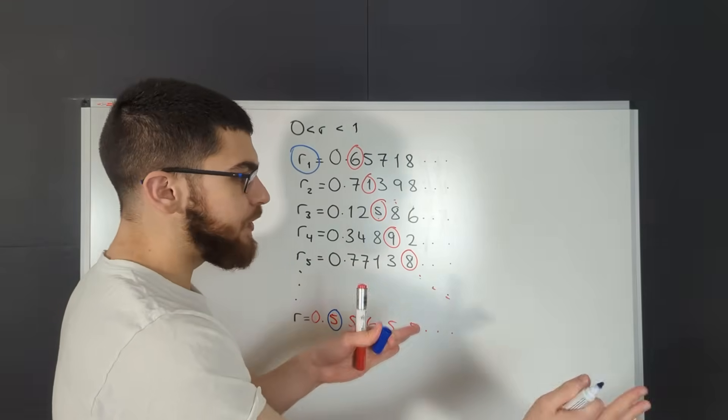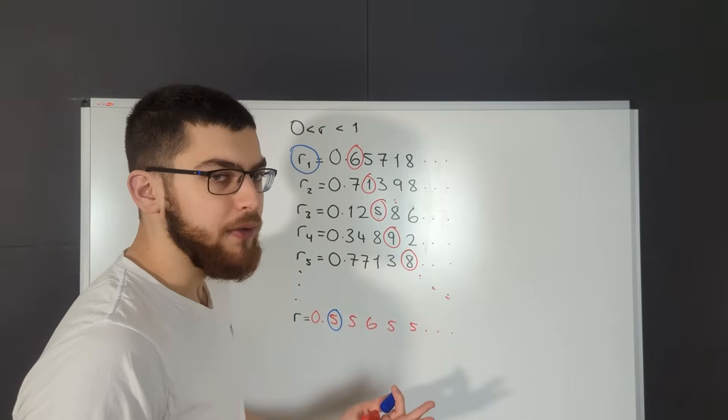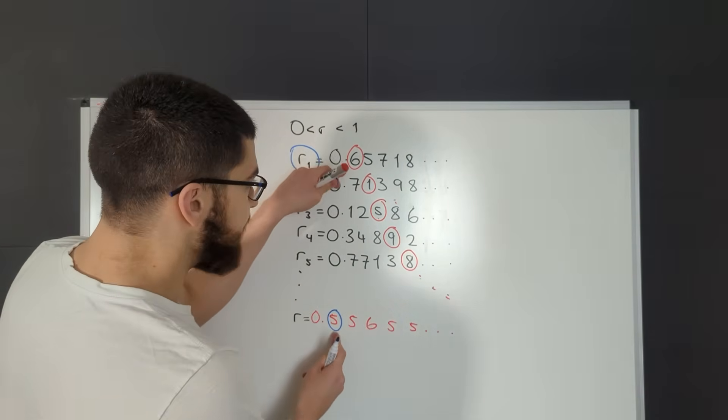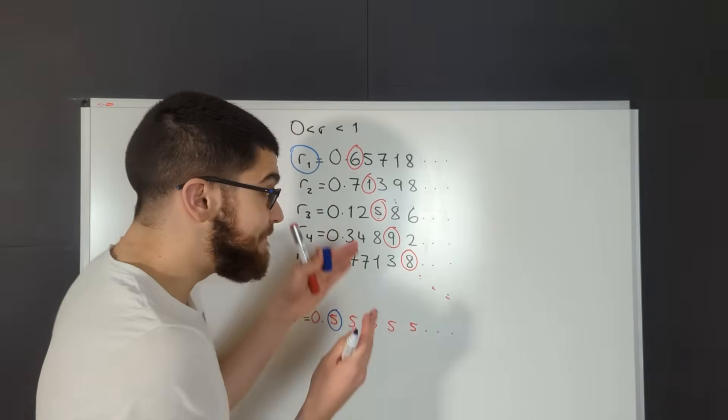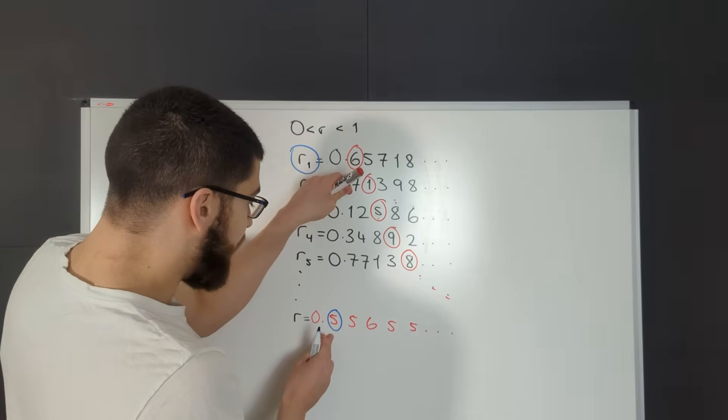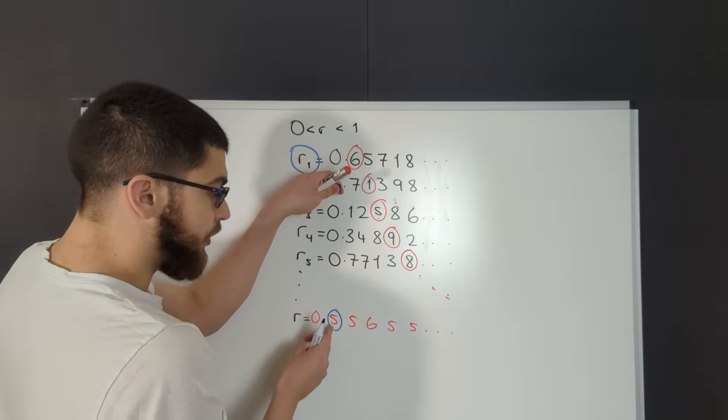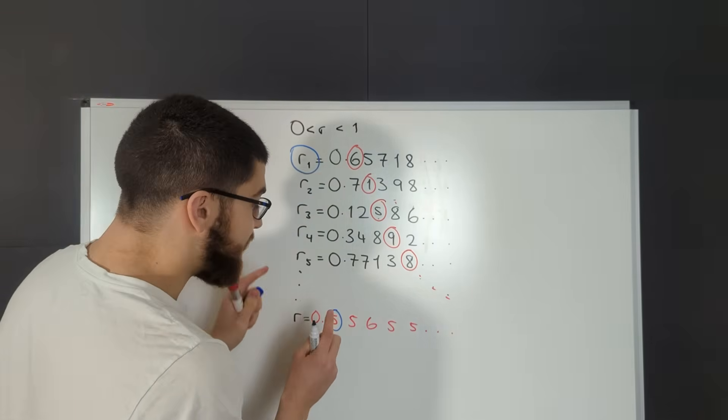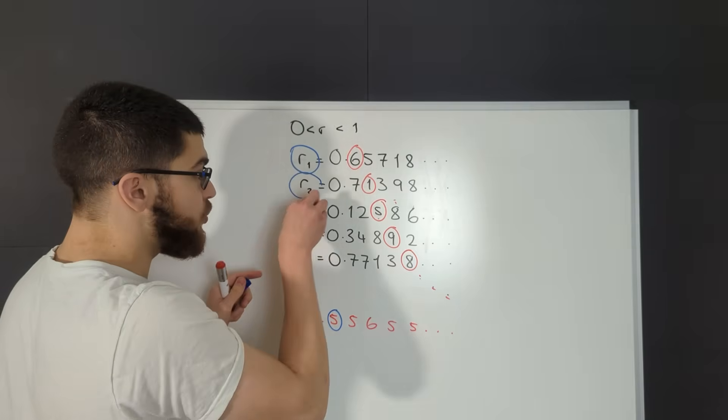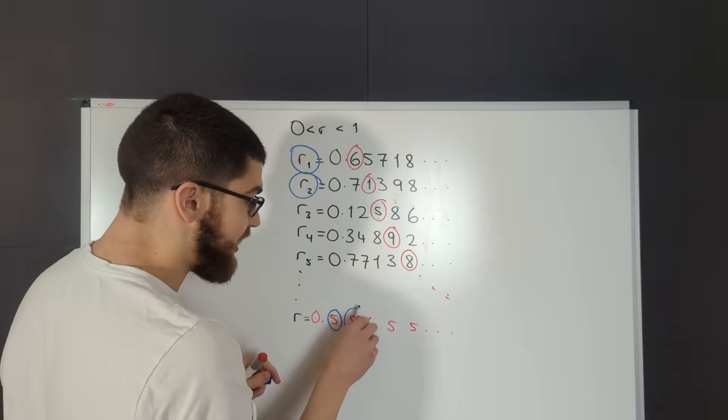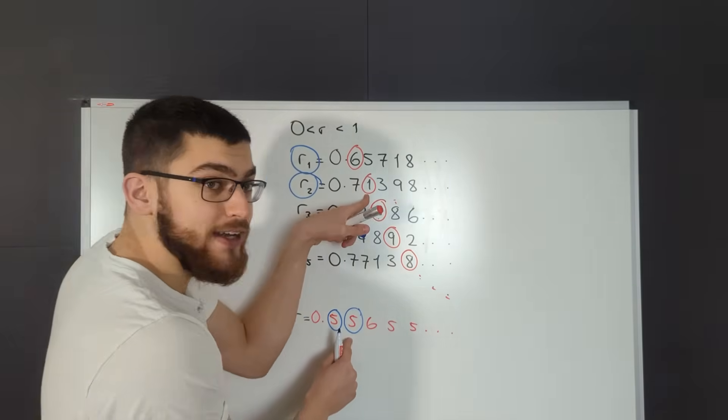You see, if it's different in the first digit, it can't be the same number. This has to be different because the first digit tells us R1 is not equal to R. It's also different to R2 because the second digit is different to the second digit of R2.